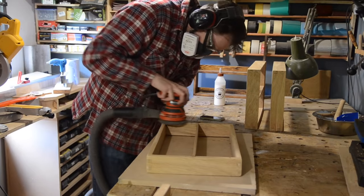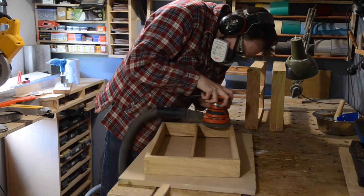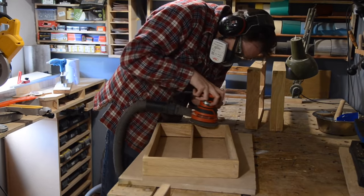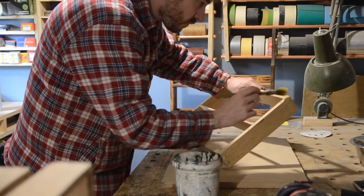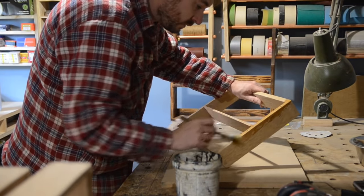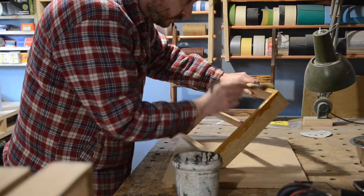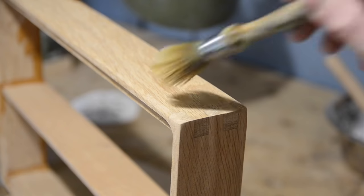I give everything another sand down, working my way up the grits, and then I can get some finish on. I'm just going for my old favorite that I always use, a bit of Danish oil. Very easy to apply, offers a nice level of protection, and I think it makes oak look great.